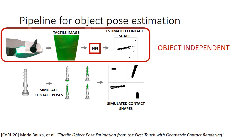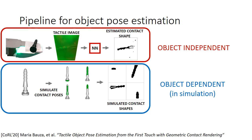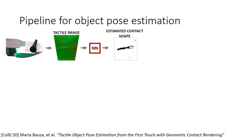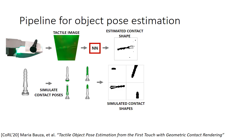We also have a way that, given the object model, we can simulate contact shapes. This is object-dependent, but it is all done in simulation, meaning that we do not need to have any real contact with the object before being able to compute any of the simulated contact shapes. Now that we have a way to estimate contact shapes and a way to simulate them, the next question is: can we find the one in the simulated set that matches well the one given from the sensor?